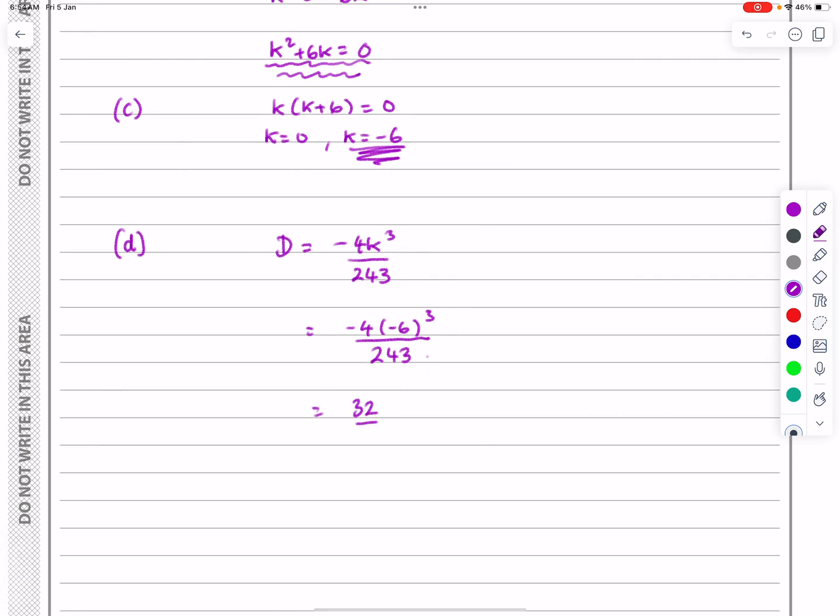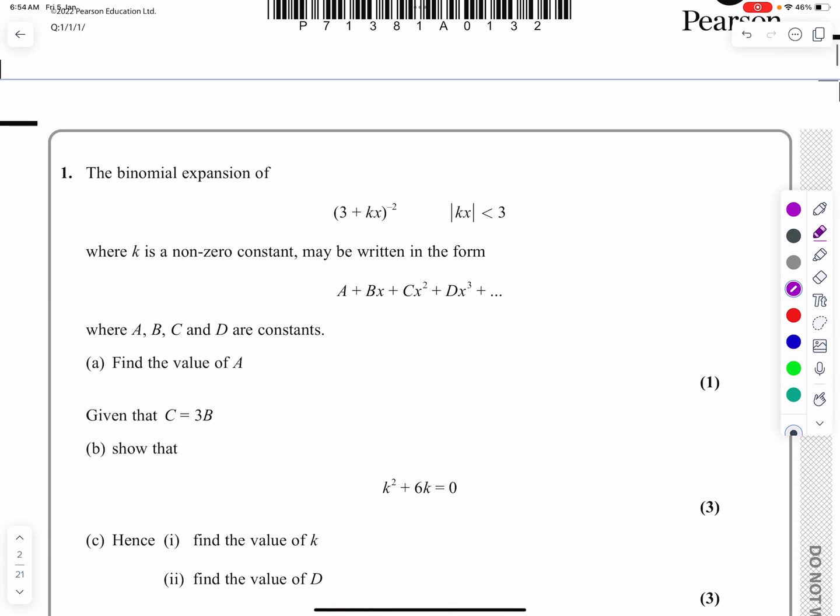But we haven't made any mistakes with this one, luckily. So D actually works out to be equal to minus 32 over nine. Okay, first question done. Hopefully that'll make sense to you.